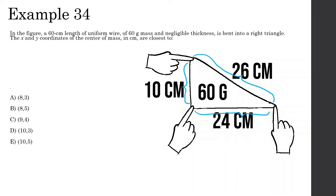The total length is 26 plus 24 plus 10 centimeters, and since the total mass is 60 grams, each centimeter corresponds to 1 gram. So the 26 cm side has 26 grams, the 24 cm side has 24 grams, and the 10 cm side has 10 grams. Since the wire is uniform, the center of mass of each side is at its midpoint.